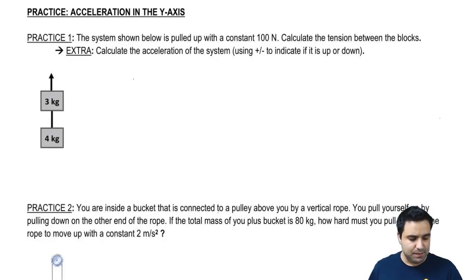Alright, so here I have a system of two blocks that's being pulled up with a constant 100 newtons, so force equals 100, and I want to know what is the tension between the two.